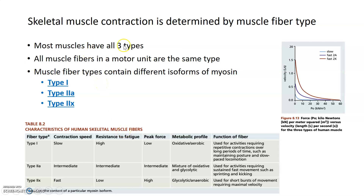Most muscles contain all three types of muscle fibers: type 1, type 2a, and type 2x. In terms of motor units, all the muscle fibers within a motor unit innervated by the same motor neuron fall into the same type. So there's diversity within muscles as organs — having all three types — but within a motor unit there is no diversity. A motor neuron innervates only one specific type of muscle fiber.